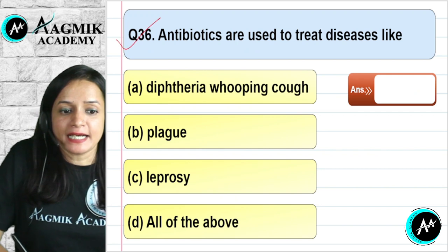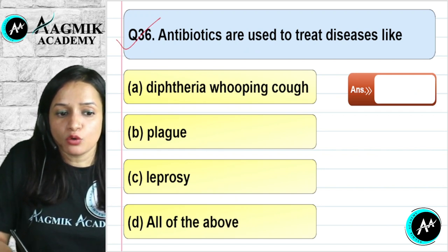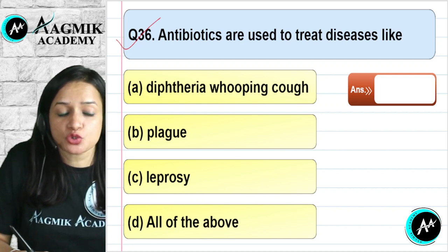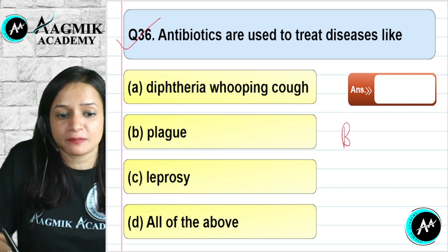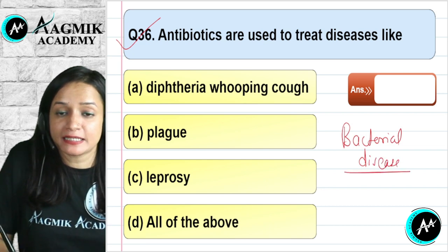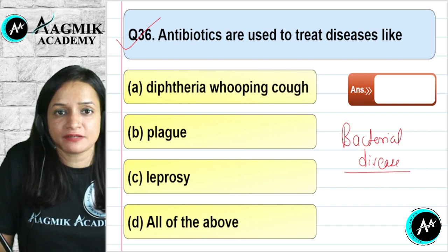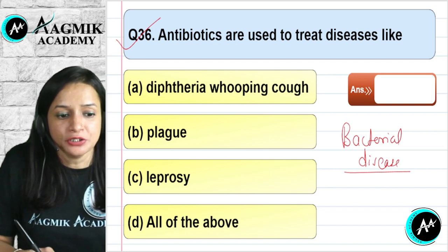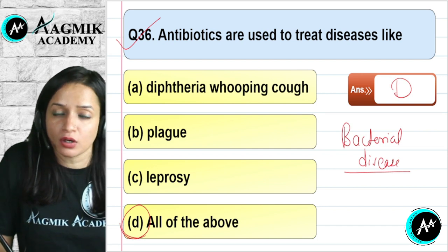Question number 36: Antibiotics are used to treat diseases like diphtheria, whooping cough, plague, and leprosy. These are mostly bacterial diseases, and antibiotics — derived from bacteria or fungi — are used to cure them. The correct option is D — all of the above.